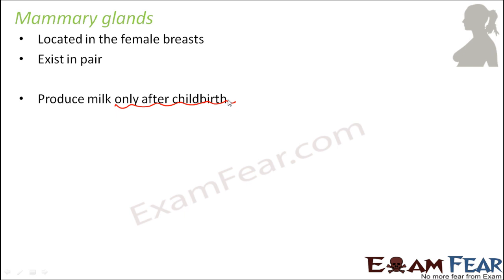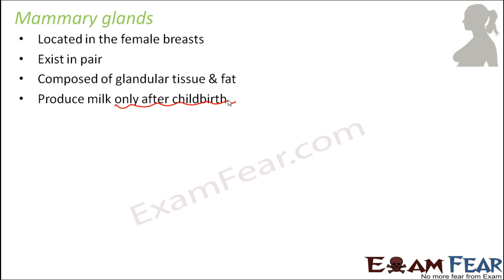Milk gets produced only after childbirth and not always. The milk continues to be produced — for some people it is there for six months, for some it is there for one year, and for some it is there for even more than a year. The mammary gland is composed of glandular tissue and fat.